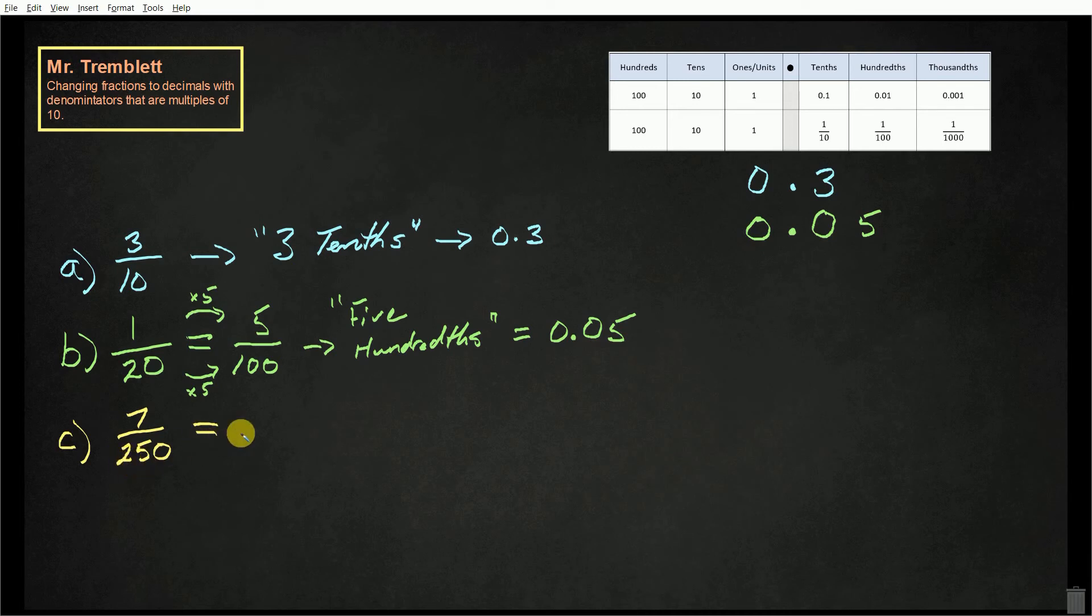I know that if I have 4 groups of 250, it would give me 1000. So I'm multiplying this by 4. Whatever I do to the bottom, I'm going to do to the top. So 7 times 4 is 28. An equivalent fraction of 7 two hundred and fiftieths is 28 thousandths.